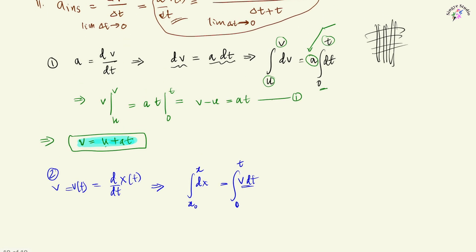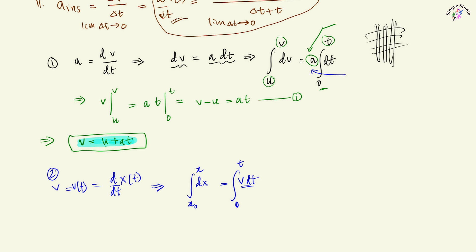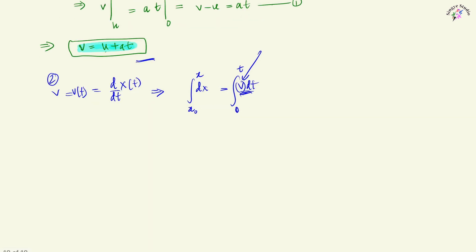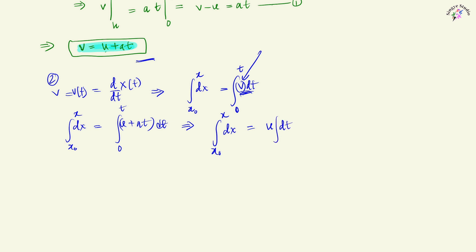Here we have to observe that only the acceleration is constant, not the velocity. So we can use the expression for v here. We have dx from x₀ to x equals the integral of (u + at) dt from 0 to t. Upon solving this, the integral of dx from x₀ to x equals u dt from 0 to t plus a·t dt from 0 to t.